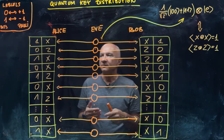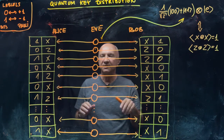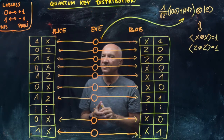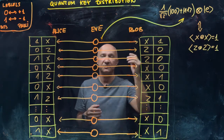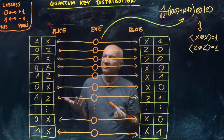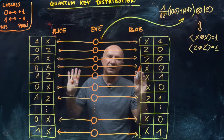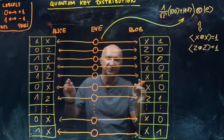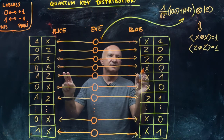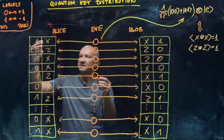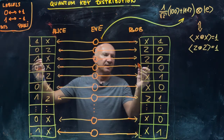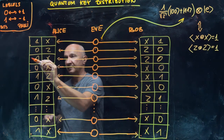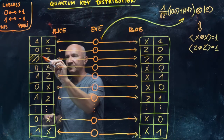The next thing Alice and Bob do is discard all the data in which they used different measurements. They know that different measurements don't give them any correlations in this particular state, so those entries are useless for key generation. They will just look at the entries where they used the same measurements.